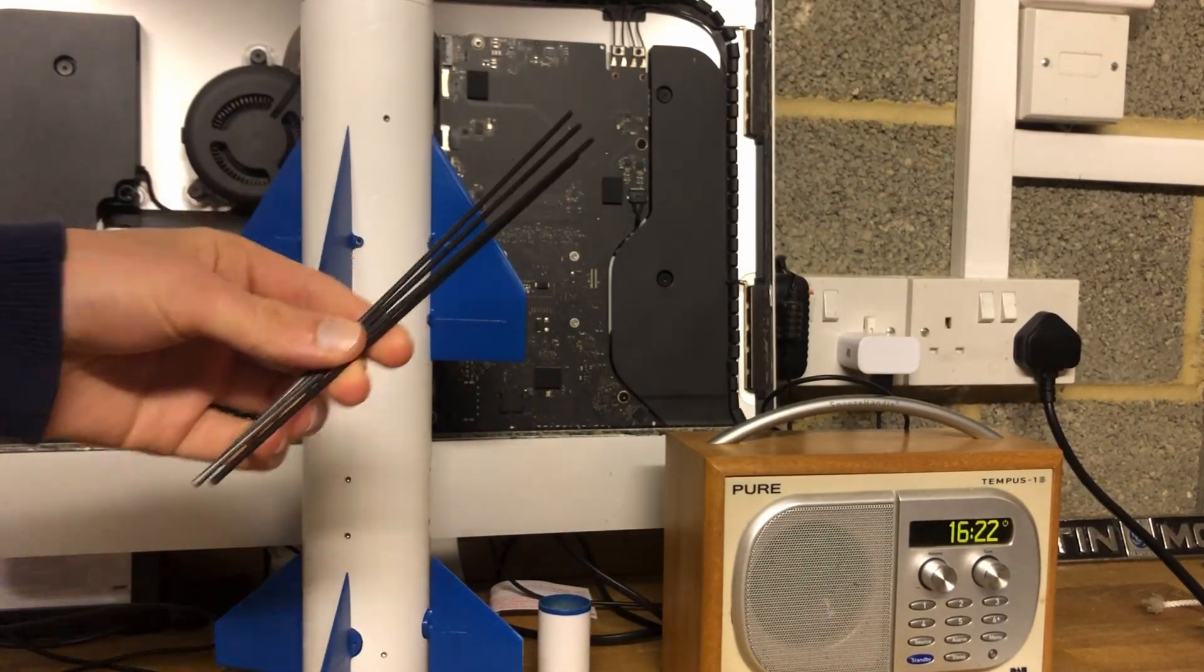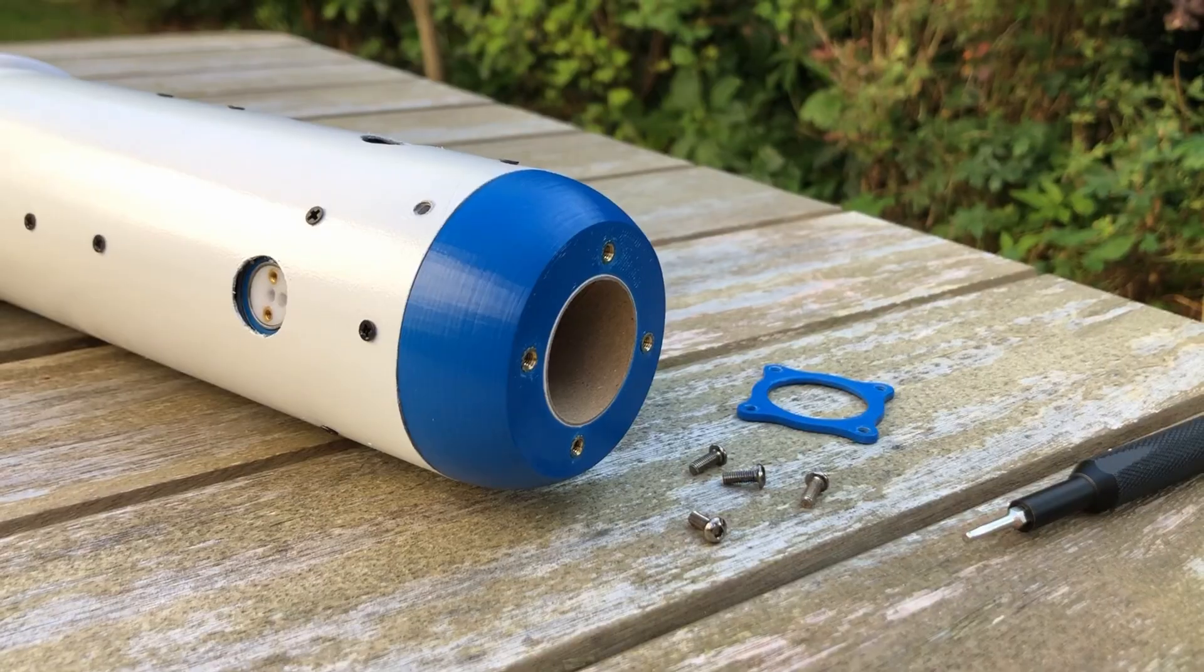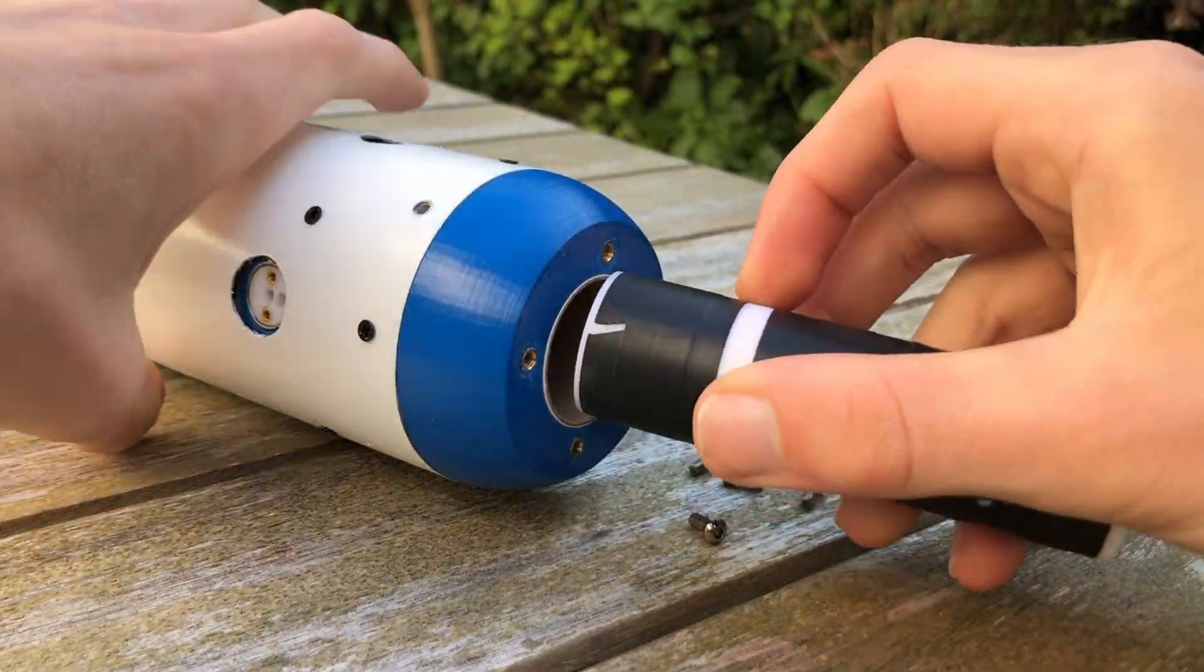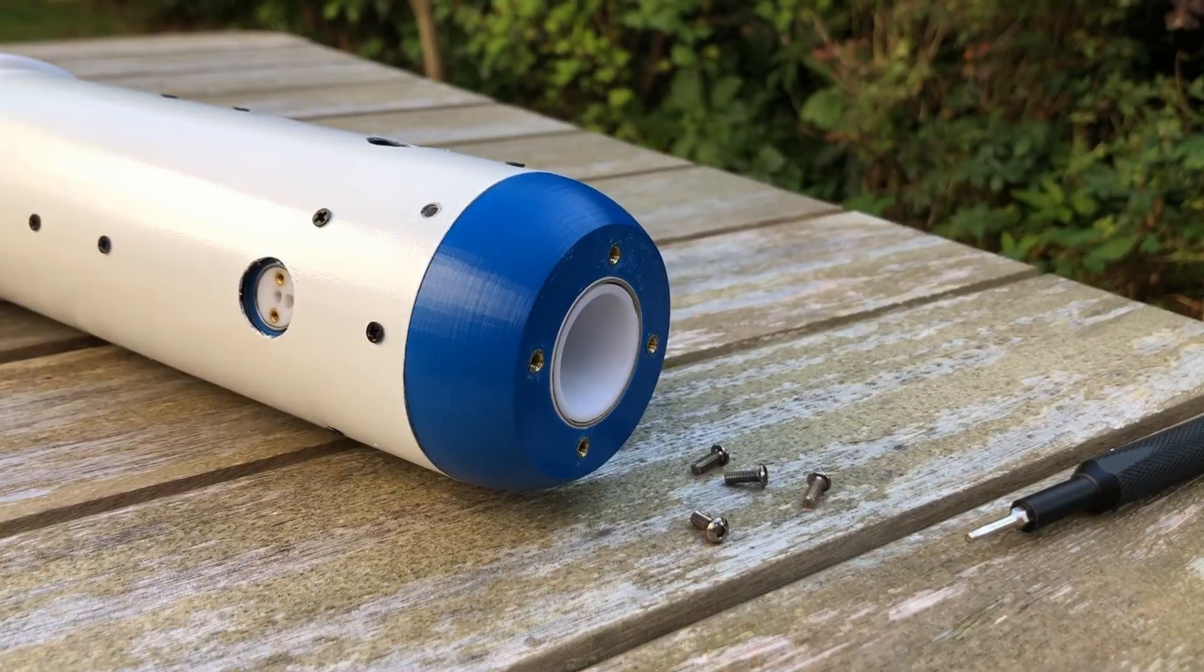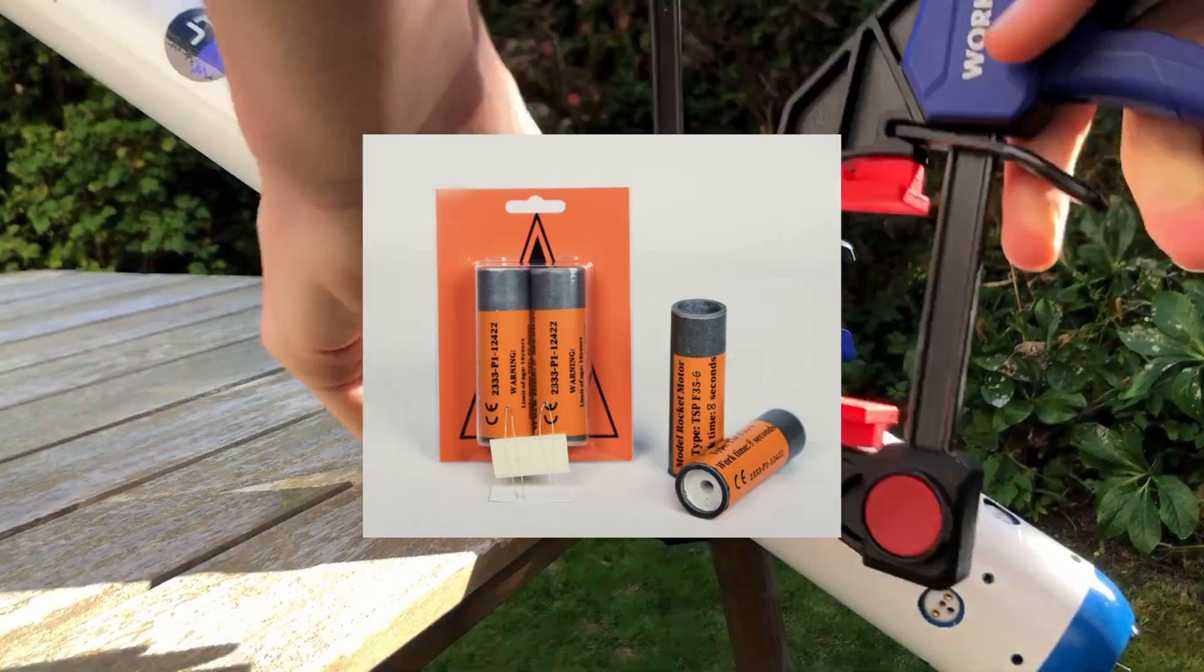To test this system, I 3D printed an adapter for an 18mm C6 that I had lying around. The actual motors that I plan to fly on are pretty expensive, and I figured that if the rocket deploys with this small motor, it'll certainly deploy with a 29mm F-35.